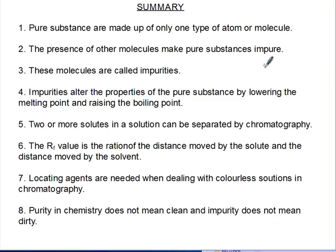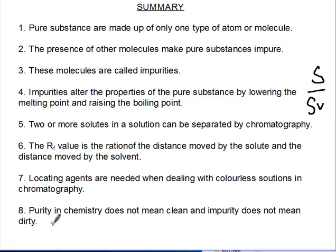In summary: pure substances are made up of only one type of atom or molecule. The presence of other molecules makes pure substances impure — these molecules are called impurities. Impurities lower the melting point and raise the boiling point, so water mixed with other substances will not boil at exactly 100 degrees Celsius. Two or more solutes in a solution can be separated by chromatography. The RF value is the ratio of distance moved by the solute divided by distance moved by the solvent. Locating agents are needed when dealing with colorless solutions. Remember, purity in chemistry does not mean cleanliness.